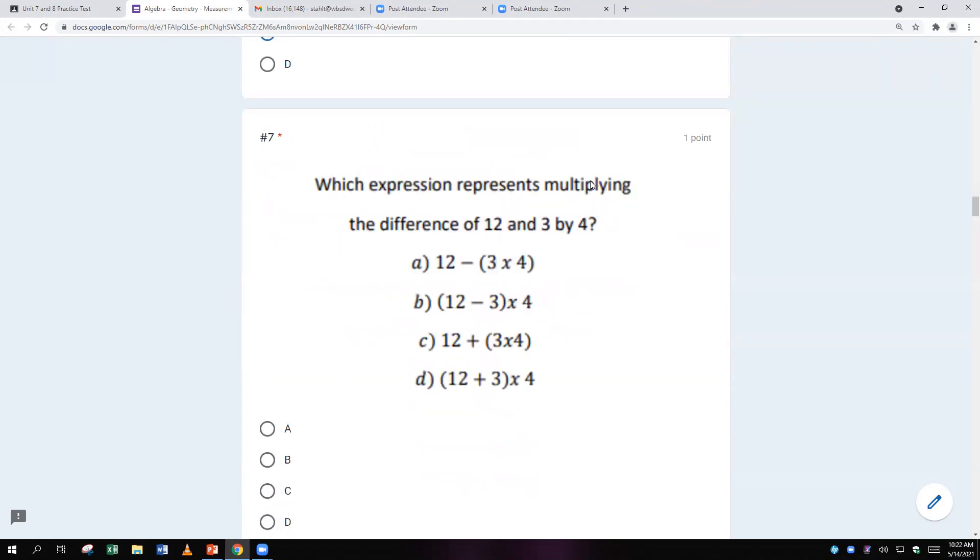Which expression represents multiplying the difference of 12 and 3 by 4? See, that says the difference. Difference is the answer to a subtraction problem. So the first thing that I have to do is I have to find the difference. So the difference is subtracting 12 minus 3. So this one has 12 minus 3 and it's in parentheses. So it makes us do it first and then multiplying it by 4. B is the correct answer. This is sum and sum. And this is subtracting, but you'd multiply first. And we don't want to multiply first. We want to subtract first because we have to find the difference of 12 and 3 and multiply that by 4.